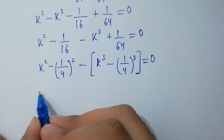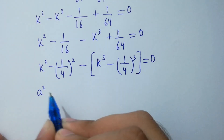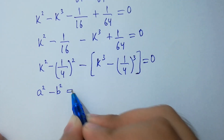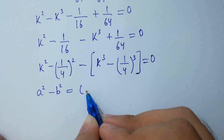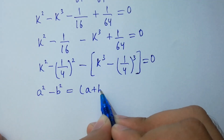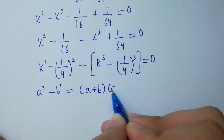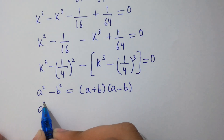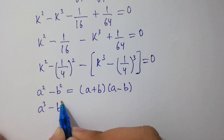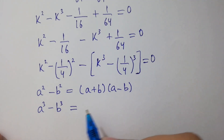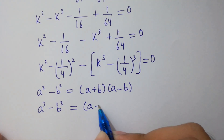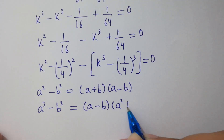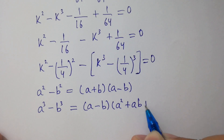Next, we apply the algebraic identities: a squared minus b squared equals (a plus b)(a minus b), and a cubed minus b cubed equals (a minus b)(a squared plus ab plus b squared).